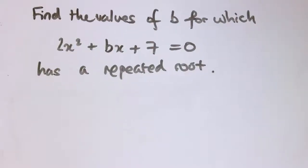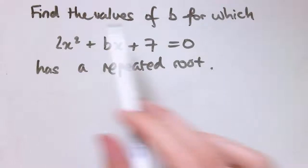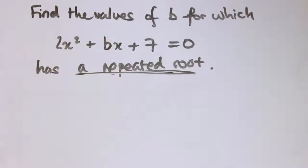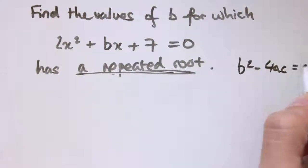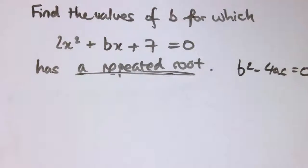And a sort of question you might get about this is something like, find the values of b for which 2x squared plus bx plus 7 equals 0 has a repeated root. We now know that a repeated root, or that means one real root, or it means that the discriminant, b squared minus 4ac, that must be equal to 0.